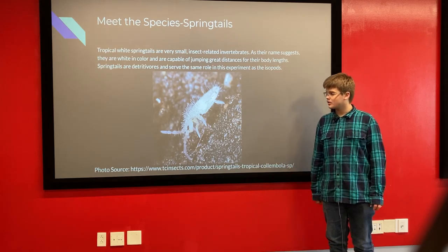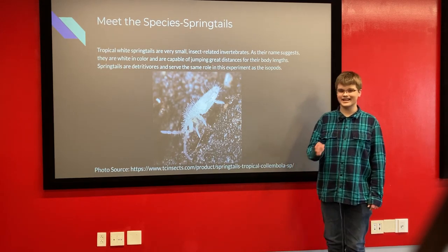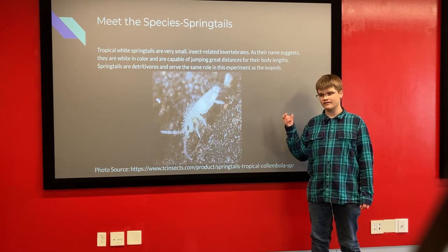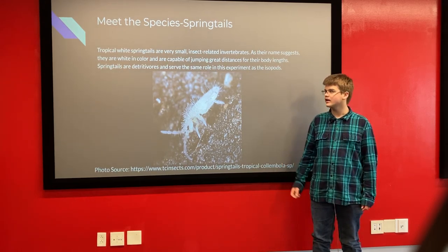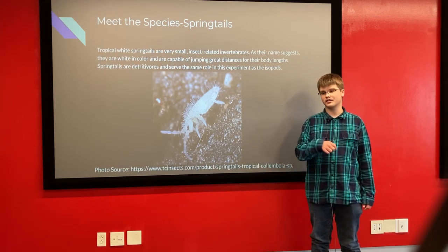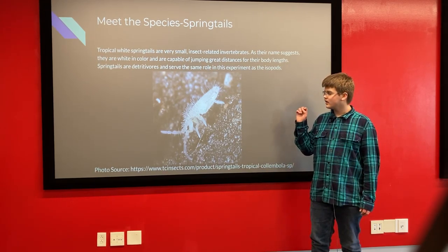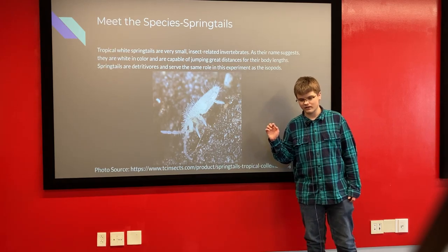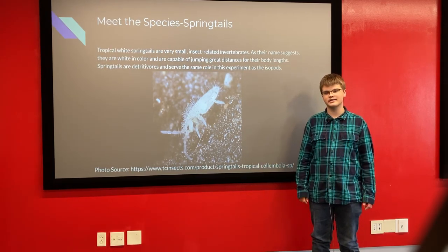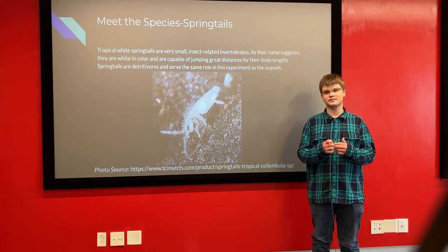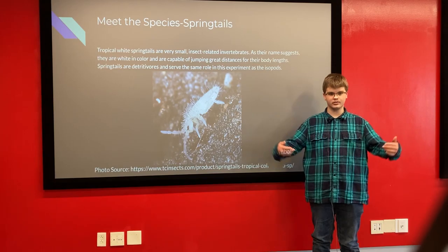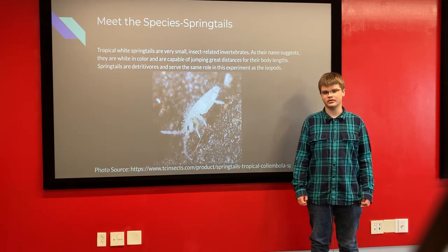Here we have tropical white springtails. They are an insect-like detritivore, but they are not insects — they do have a somewhat chitinous and hard exoskeleton, which insects do not have. They look a lot like insects and are very effective detritivores. They were included because generally when you buy a culture of isopods you're going to get springtails with them, and they were just an extra beneficial factor in those tubs.